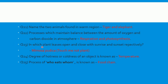Question 23: in which plant do leaves open with sunrise and close with sunset? Answer is Mimosa pudica — common name touch-me-not plant. Question 24: degree of hotness or coldness of an object is known as — answer is temperature. Question 25: the process of who eats whom and is eaten by whom — this process is known as food chain.